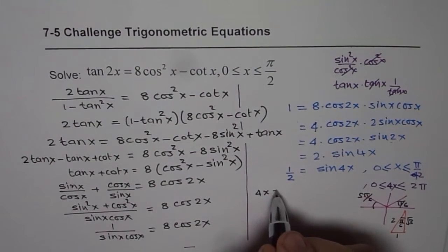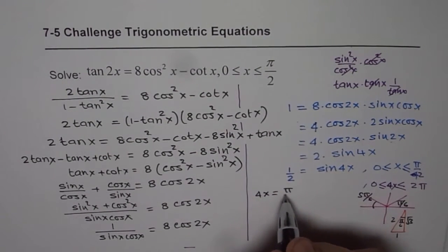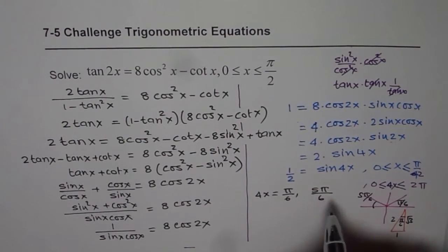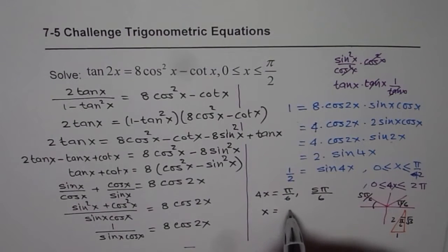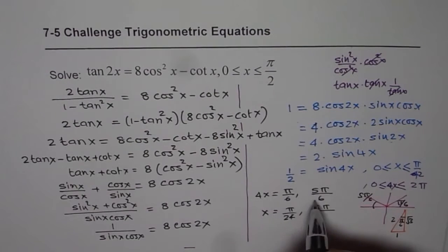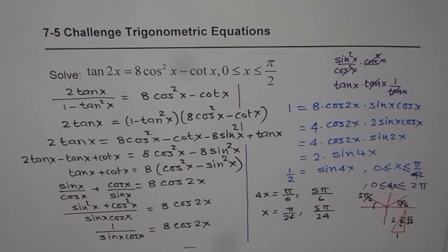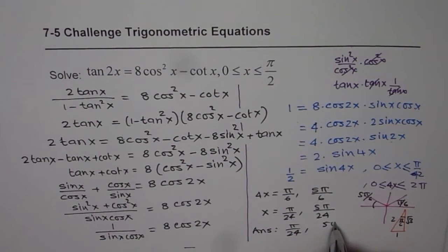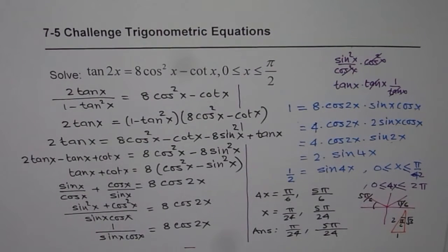We get 4x is equal to pi by 6 or 5 pi by 6, and then x equals pi by 24 or 5 pi by 24. So that is the solution. The answer is pi by 24 or 5 pi by 24. Now these are the steps which you should follow to solve this question.